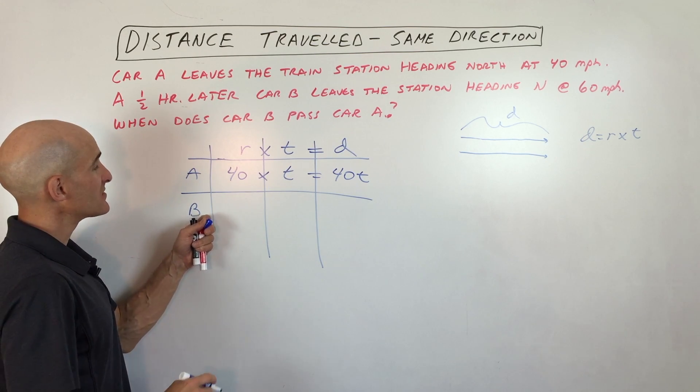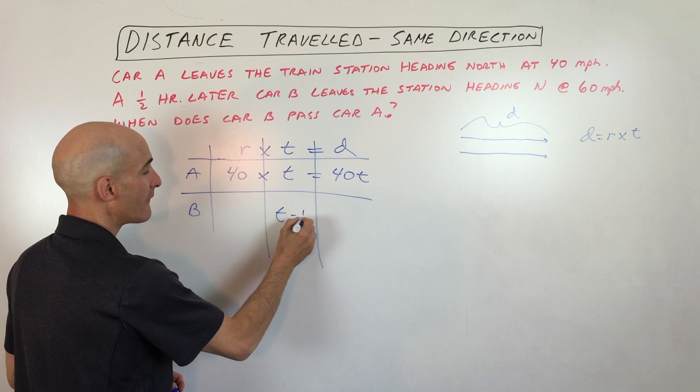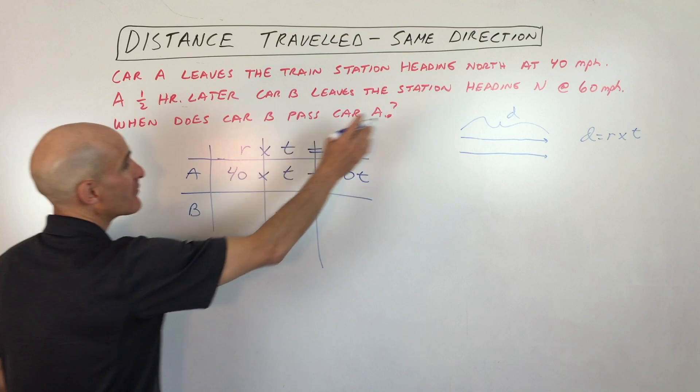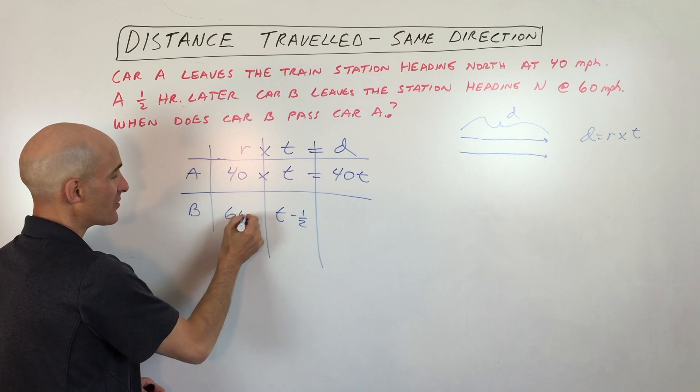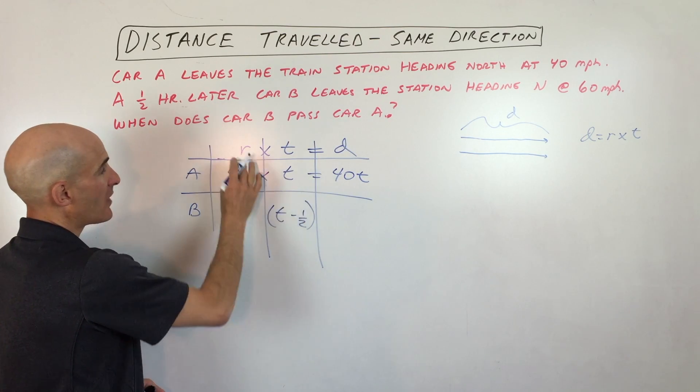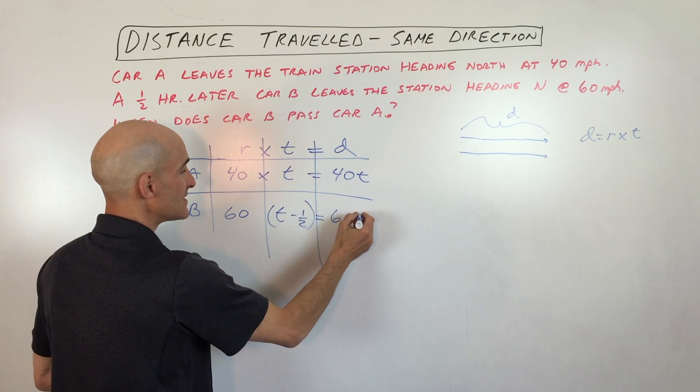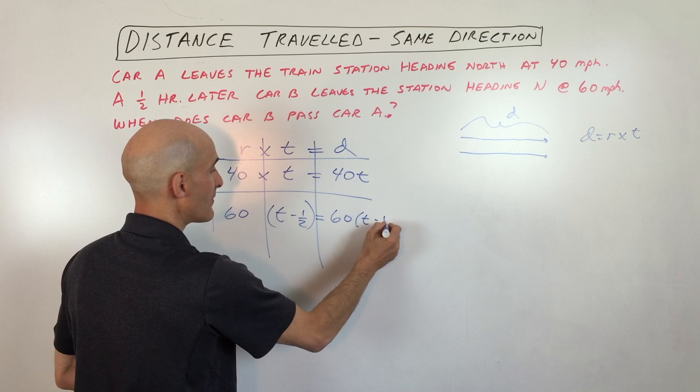Car B leaves a half hour later. So it's been traveling for a half hour less time, so T minus one half. But it's traveling at 60 miles per hour. It's faster. So here, when you multiply the rate times the time, you get a distance of 60 times T minus one half.